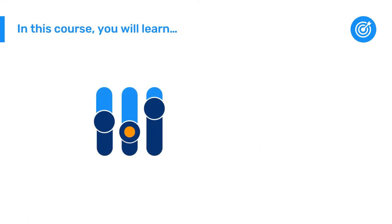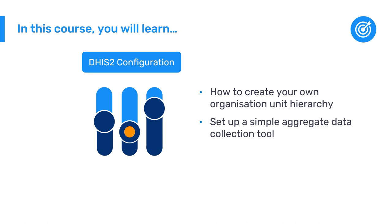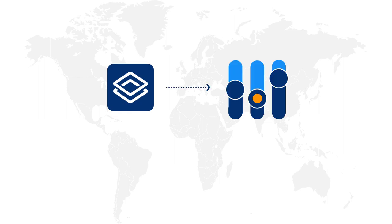In this course, you will learn the basics of DHIS2 configuration. This includes how to create your own organization unit hierarchy, the key steps of setting up a simple aggregate data collection tool for a health program, including creating data elements, creating data sets, and creating indicators for data analysis. This will help prepare you to be able to set up a DHIS2 instance to meet your specific needs. We hope you enjoy this course.